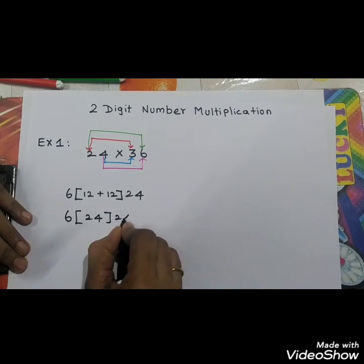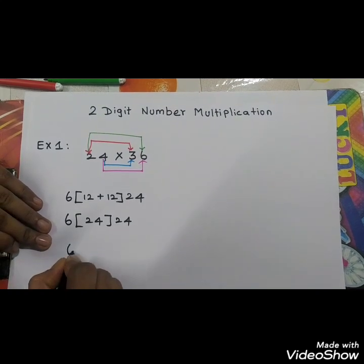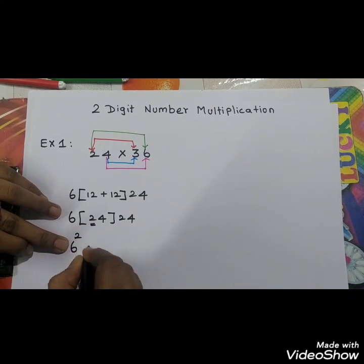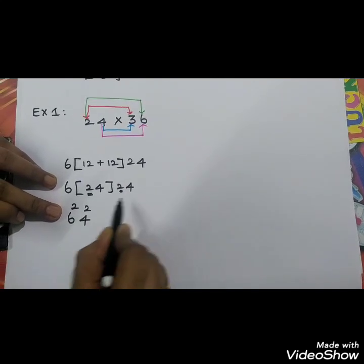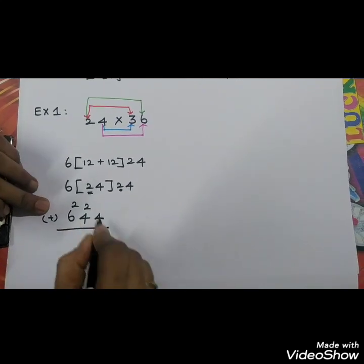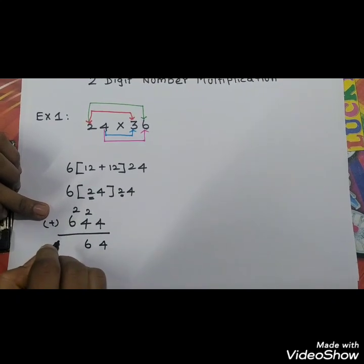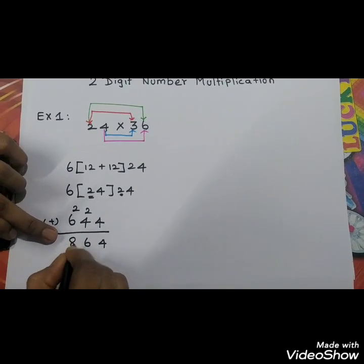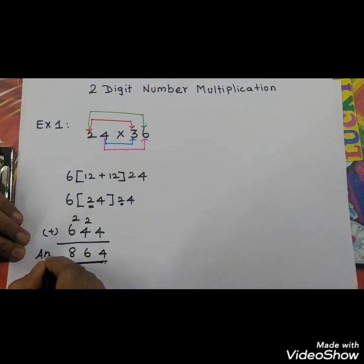Write the 24. Now arrange the values: 6 goes in position, carry the 2 to the upper place, write 4 below. Again, carry the 2 upper and write 4 here. Using the addition method: add 4, then 2 plus 4 plus 6 gives 8. So the final answer is 864.